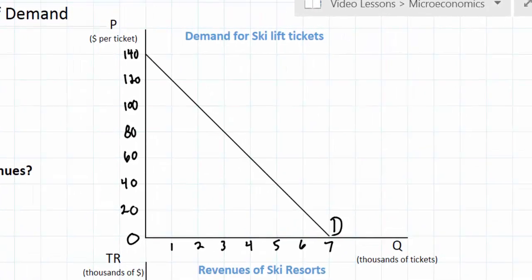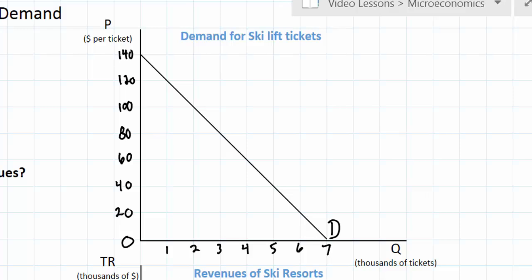To guide us in our analysis today we're going to be looking at the demand for ski lift tickets that we see here on the right. Notice that as the price falls from $140 per ticket to $0 per ticket, the quantity demanded increases from zero lift tickets up to 7,000 lift tickets.